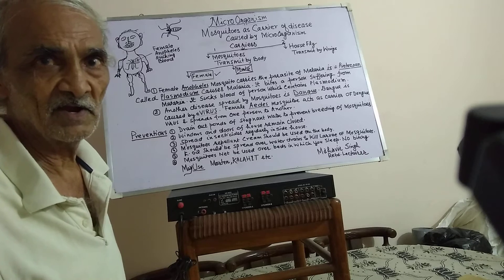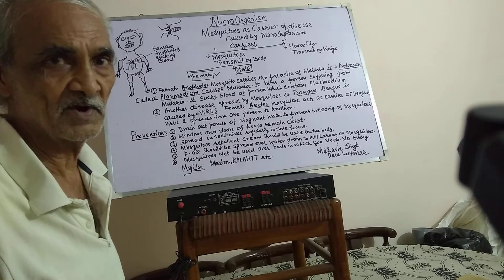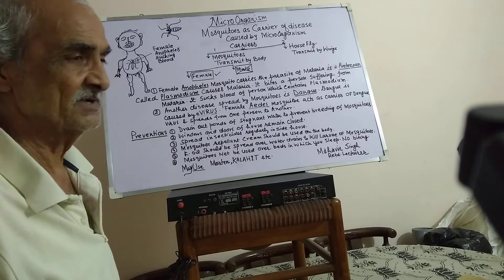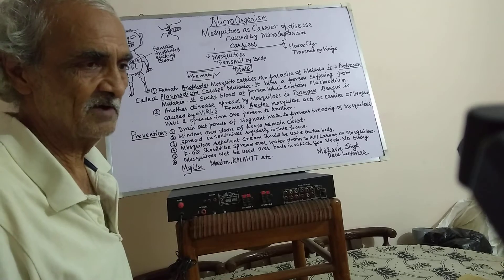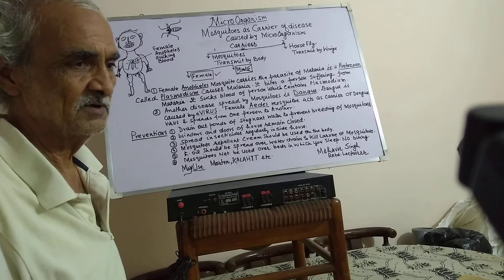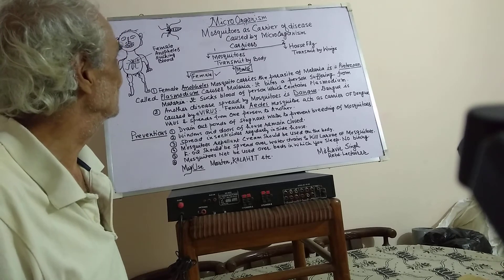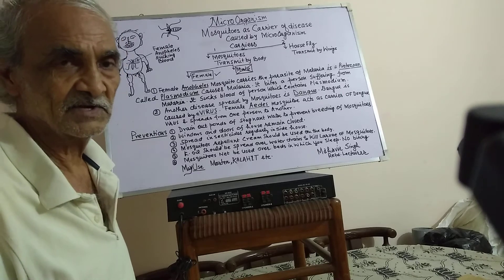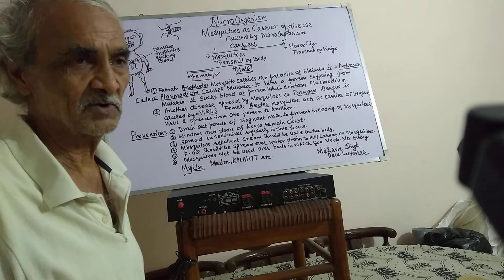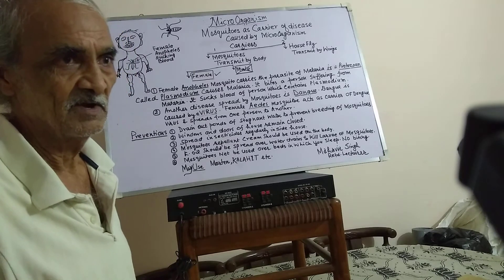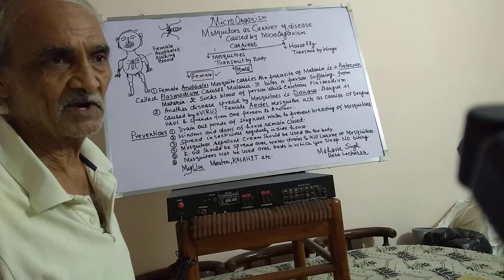Micro-organisms include virus, bacteria, protozoa, and fungus. We discussed in the previous video the uses and harms of microbes. Today we will discuss the carriers of microbes — the carriers of disease caused by microbes.